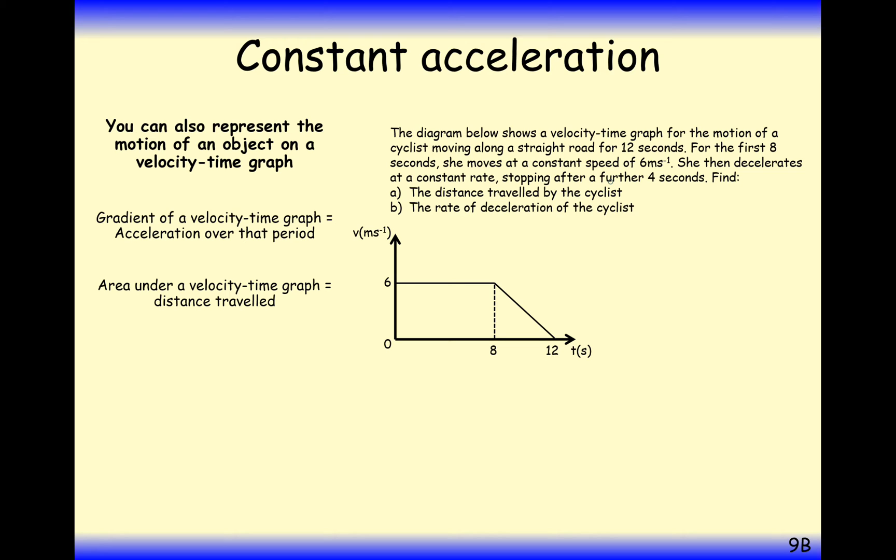The distance traveled by the cyclist. Now the distance traveled here is the area under the graph. You have to break this graph up into several different sections here. You can use the area of trapezium formula like they're doing here, or break it up into a rectangle and a triangle.